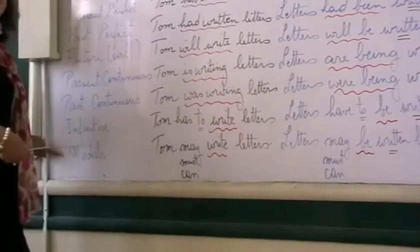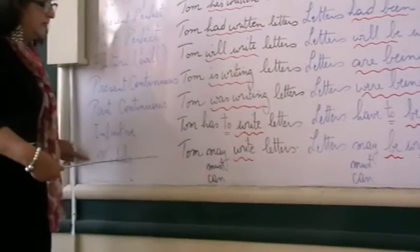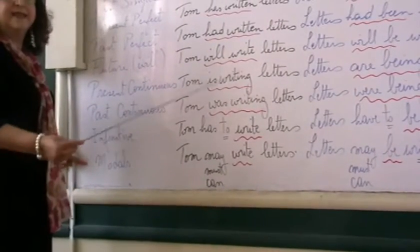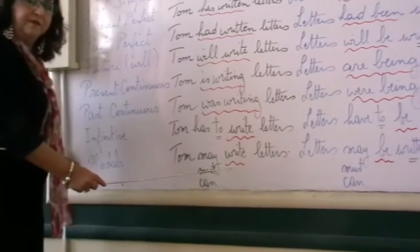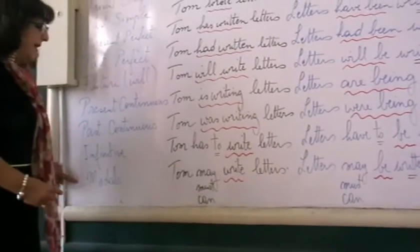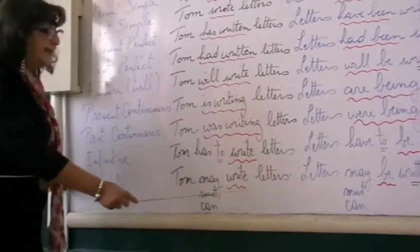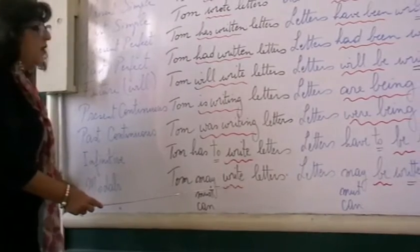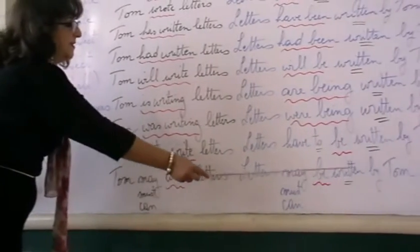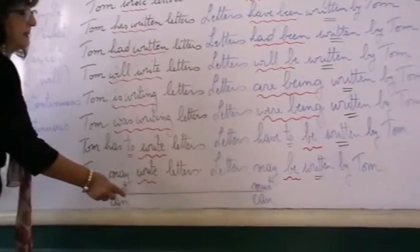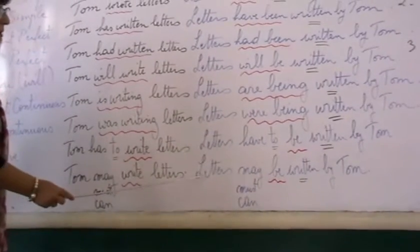The last thing is modal verbs. What are the modal verbs? Like may, must, can — all these. They are followed by the infinitive. So: Tom may write letters becomes letters may be written by Tom. Or letters must be written by Tom. Or letters can be written by Tom.